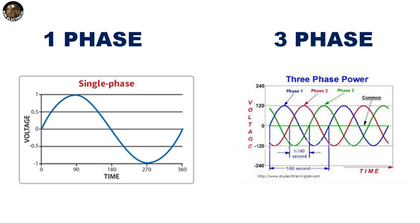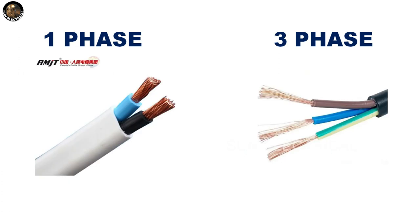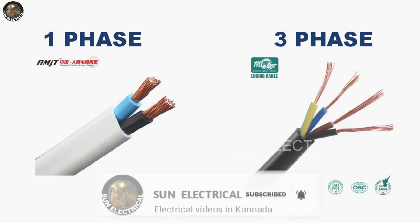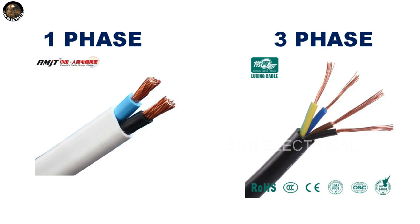If you have one phase, you will see one cycle, and three-phase will be three cycles. So single-phase will be one sine wave, and three-phase will be three sine waves. Single-phase has only a single wire and one neutral wire.